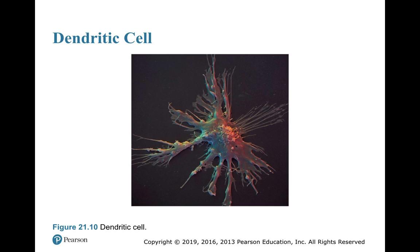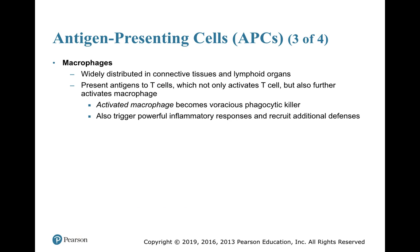Here's a dendritic cell. Macrophages are widely distributed in connective tissue and lymphoid organs. They present antigen to T cells. That not only activates the T cells, but it also activates the macrophage, and that activated macrophage becomes what we call an angry macrophage. That angry macrophage is a voracious phagocytic killer, and it also triggers powerful inflammatory responses to recruit additional defenses.